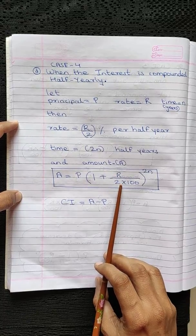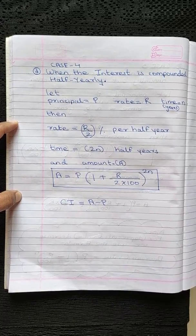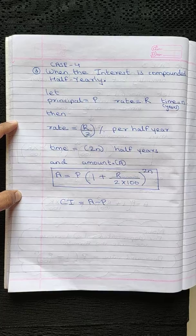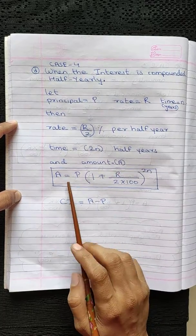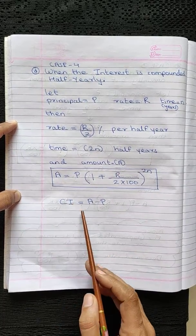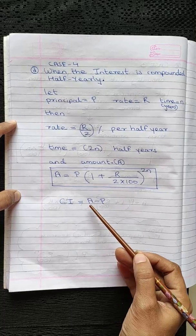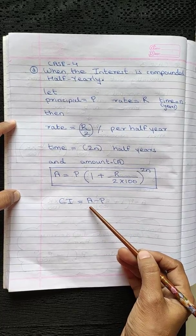We have multiplied by 2 because the compound interest is being calculated twice in the year, and compound interest will be obtained by subtracting principle from the amount.